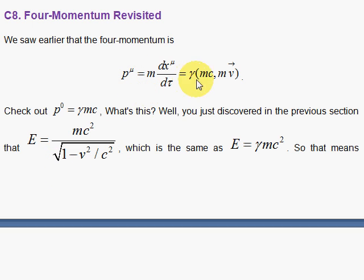The four-momentum we already have seen. Since the energy is mc² over the square root of 1 minus v²/c², we have energy is also γmc², which means this zeroth component here can be written as the energy divided by c.